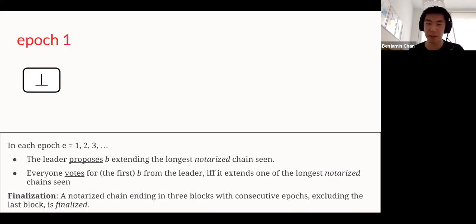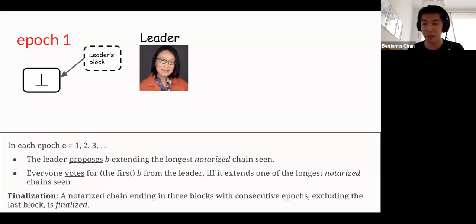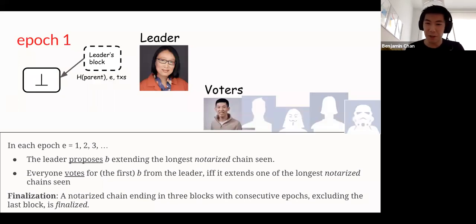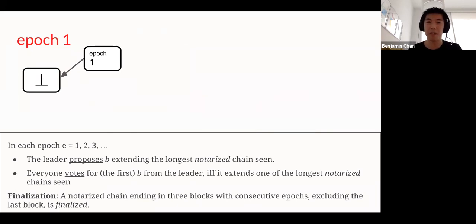Let's say that we start with a genesis block, which is notarized. In epoch 1, the leader of epoch 1, let's say Elaine, will propose a block for everyone. All the voters are going to vote for that block. Let's say that block accumulates more than 203 votes, and that we see all these votes. So, this epoch 1 block becomes notarized in our view. Same thing happens in epoch 2. A leader proposes a block, people vote for it, and we see those votes.